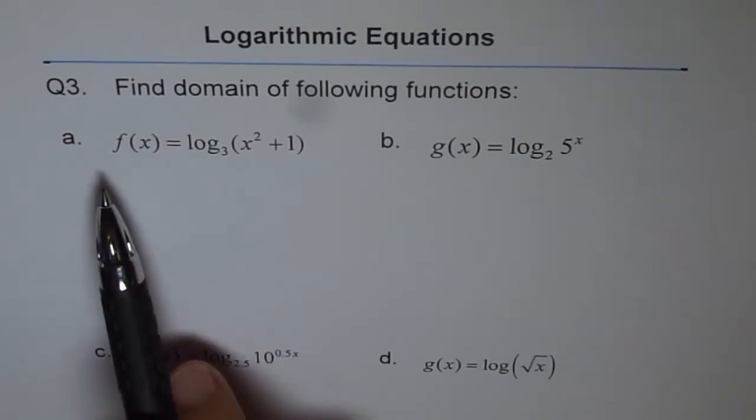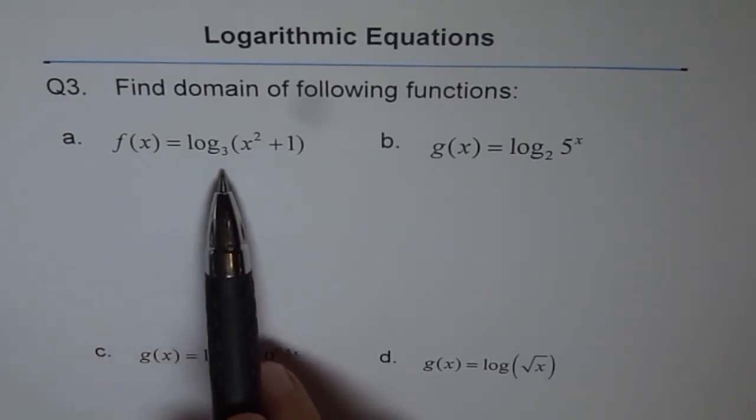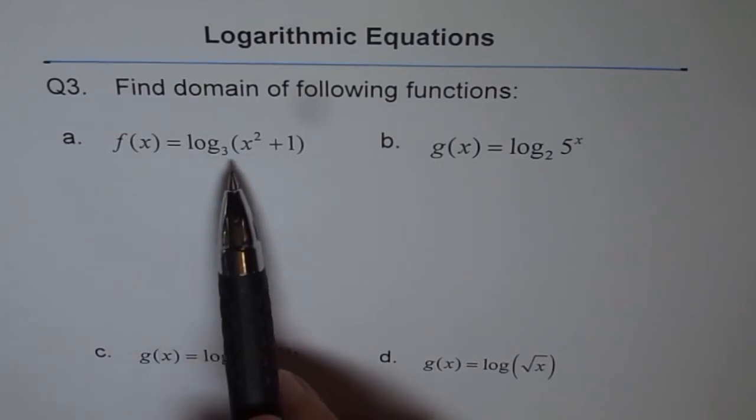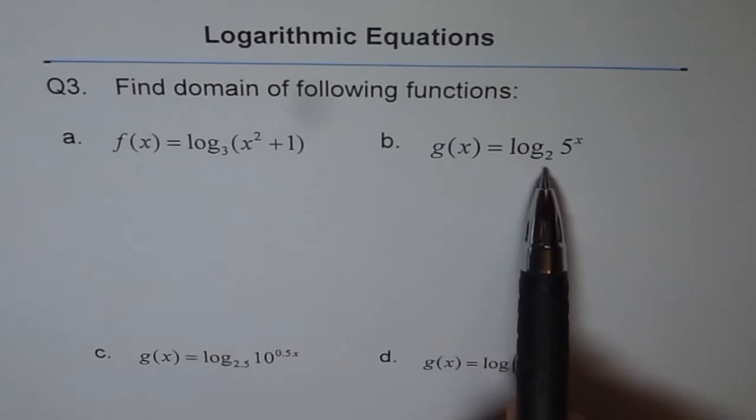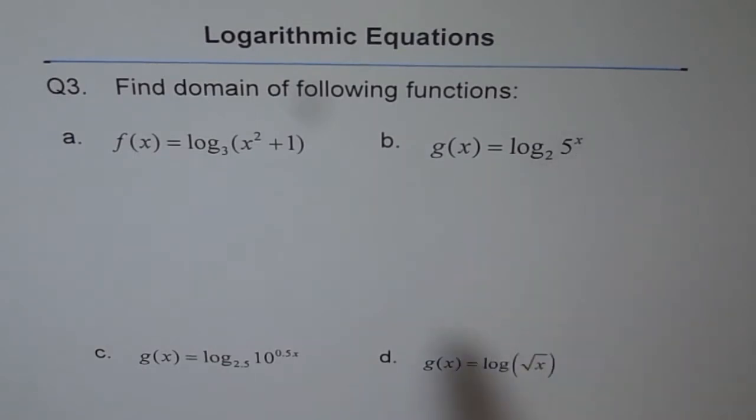Part a is f(x) equals log₃(x² + 1) and b is g(x) equals log₂(5ˣ).